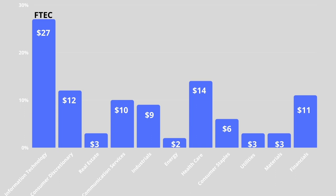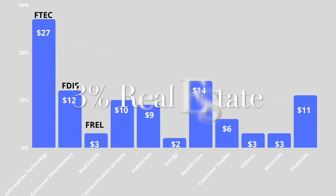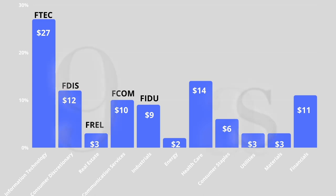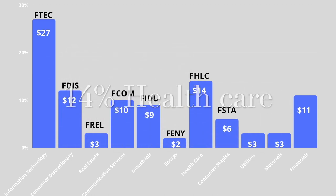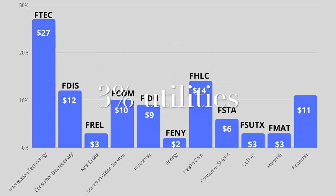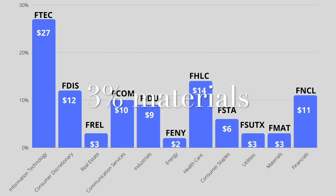Converting those percentages to dollars: $27 in FTEC, $12 in FDIS, $3 in FREL for real estate, $10 in FCOM for communication services, $9 in FIDU for industrials, $2 in FENY for energy, $14 in FHLC for healthcare, $6 in FSTA for consumer staples, $3 in FSUTX for utilities, $3 in FMAT for materials, and $11 in FNCL for financials. All of these are ETFs from Fidelity, and I use Fidelity because they are generally low-cost ETFs.